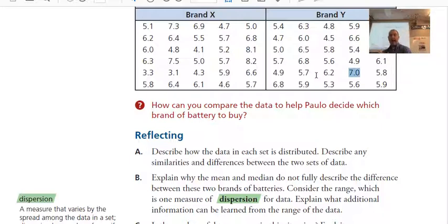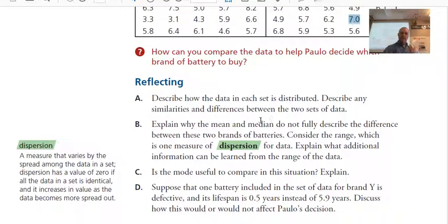Now, if you bought brand X, you could get one of those batteries that lasts you over 8 years. According to this data, you'd never get a battery that lasts you over 8 years with this one. But, what does the range tell you about the quality of the battery? And so, this is what I want you to think about. Dispersion. So, consider the range was one measure of dispersion. It's basically how the data is spread out.